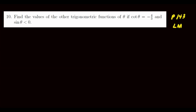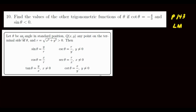The first thing we need to do is find the quadrant — is it quadrant 1, 2, 3, or 4? Let's have a review first. Let theta be an angle in standard position, let point Q(x,y) be any point on the terminal side of theta, and r is equal to the square root of x squared plus y squared. So this is a circle with radius r. Then we define the six trig functions from this.